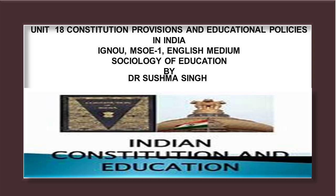Entry 66 covers coordination and determination of standards in institutions for higher education or research and scientific and technical institutions. List 2, the State List, includes educational issues of the state including universities. Entry 12 covers libraries, museums and other such institutions controlled and financed by the state, ancient and historical monuments and records other than those declared to be of national importance.